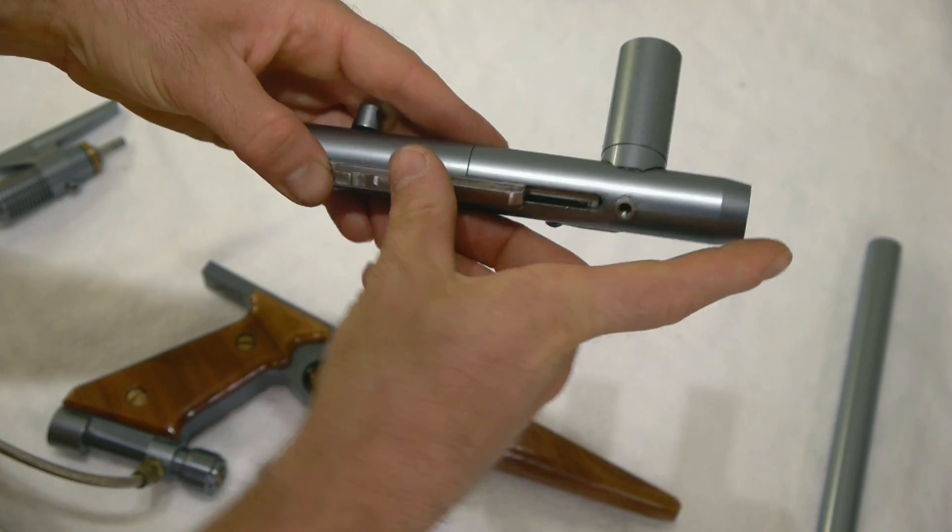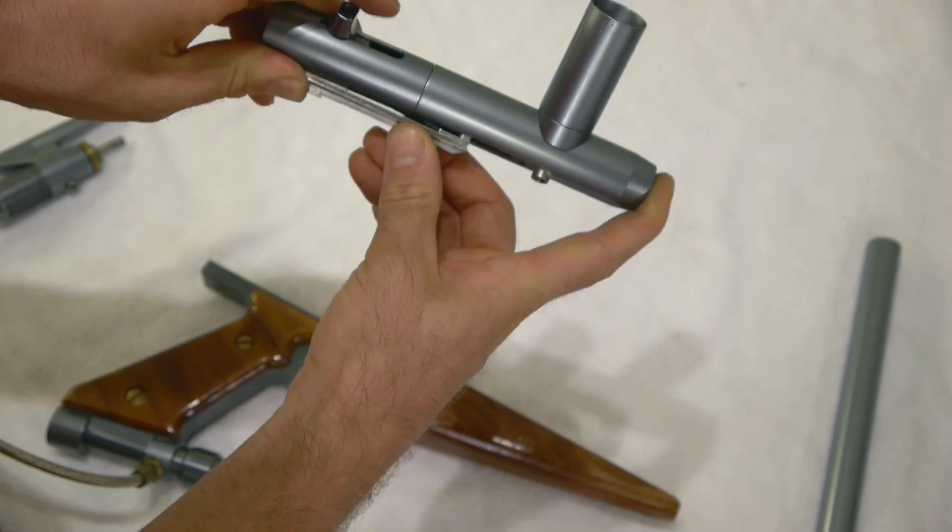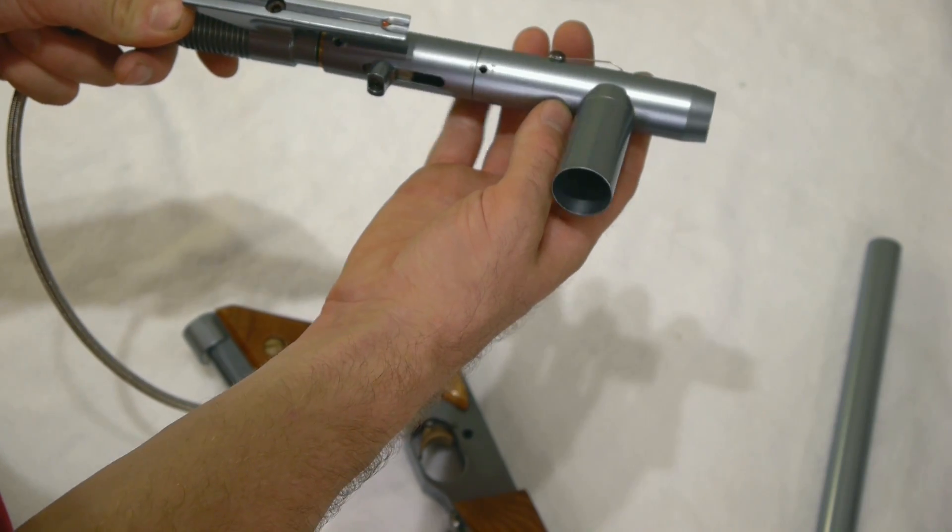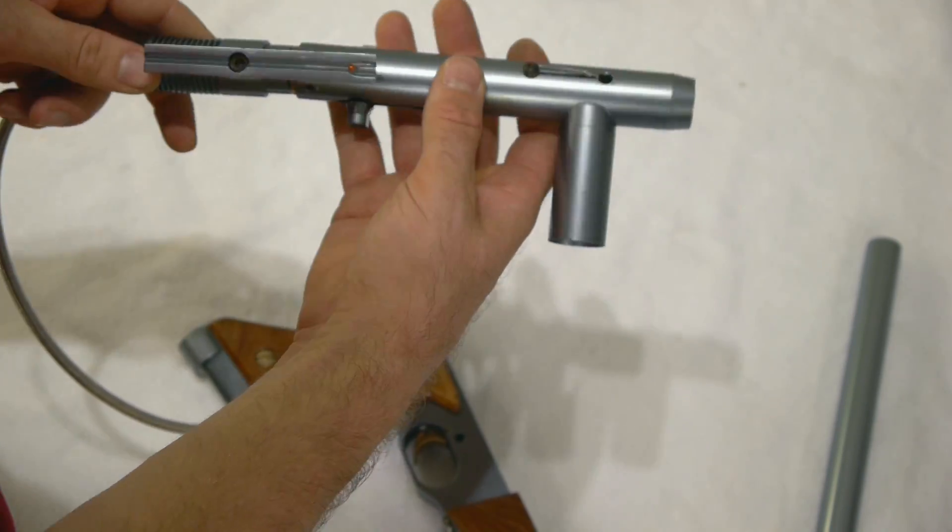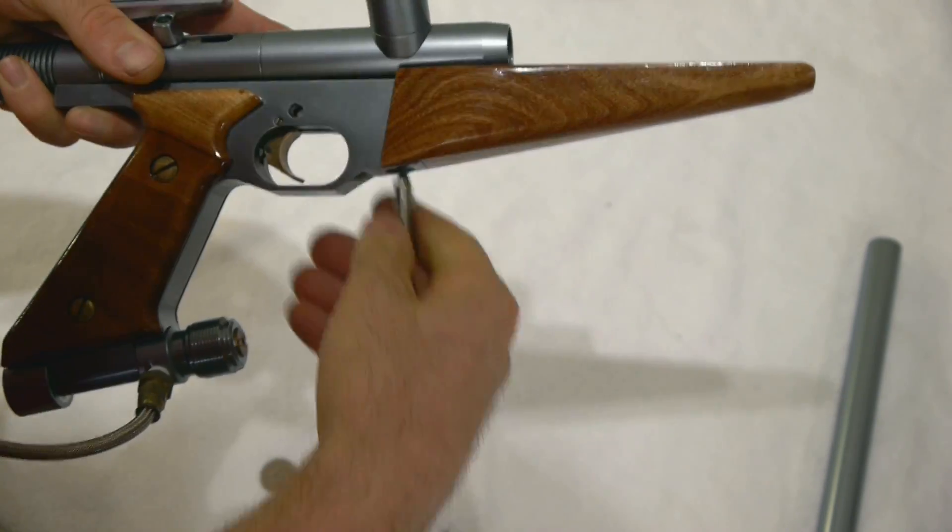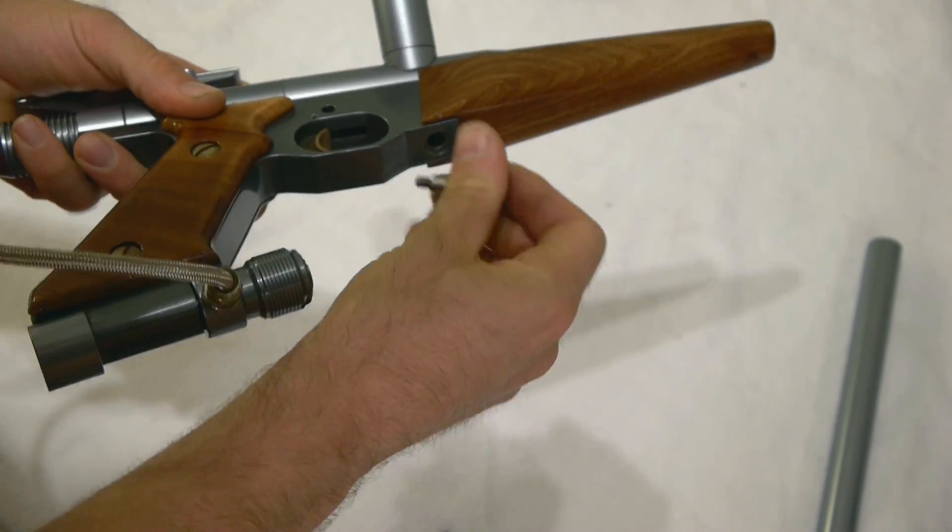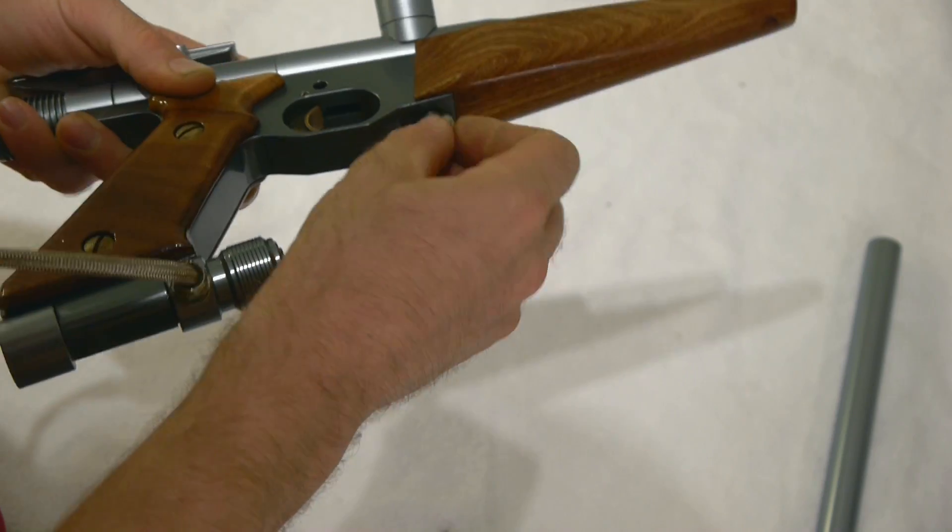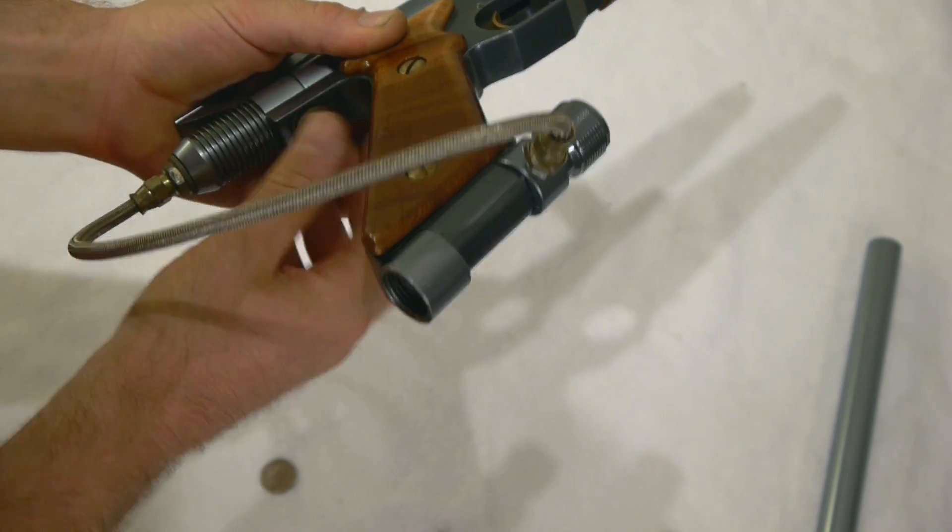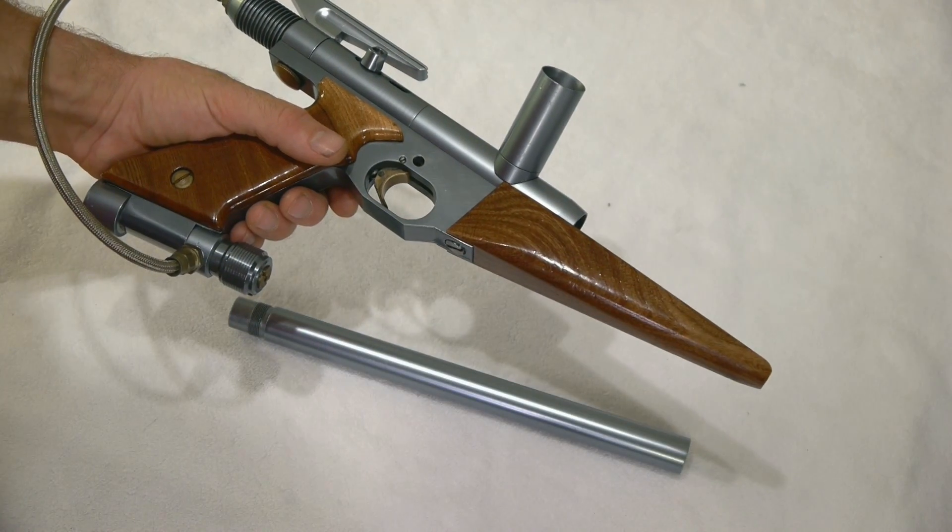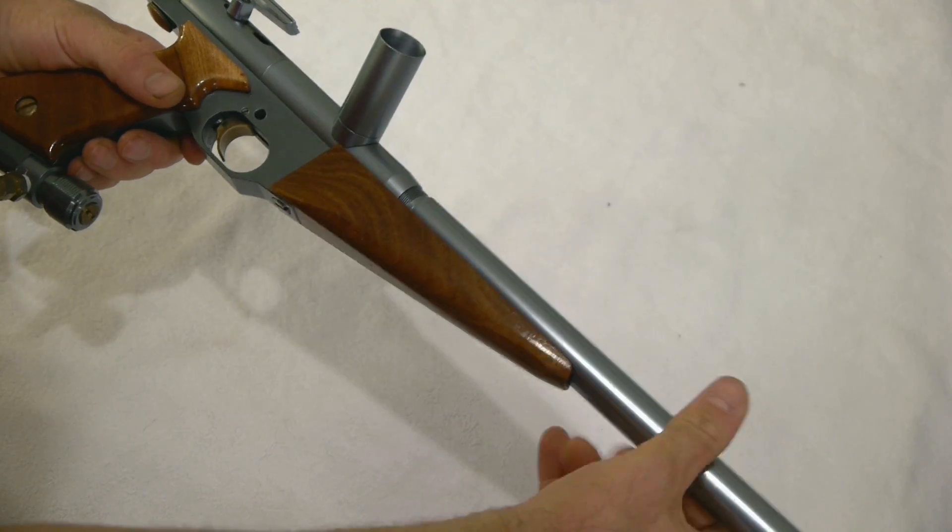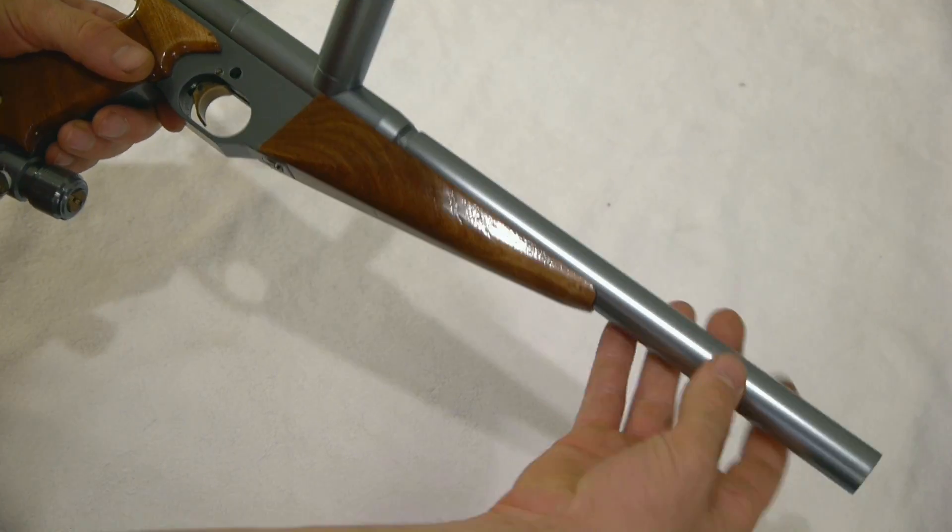There's our Nelson style valve body. I'm going to take my pinky, put it in the breech, and push the valve out. Now we can see we have our bolt and hammer assembly, and we have our breech.